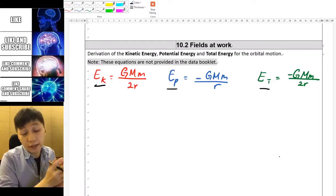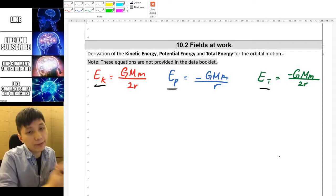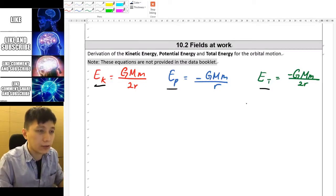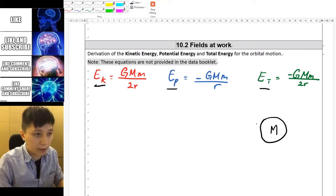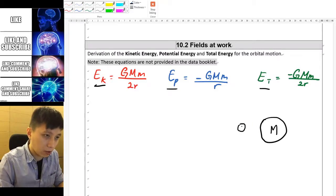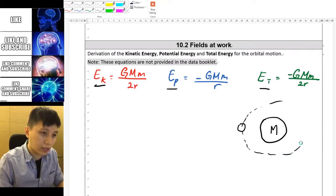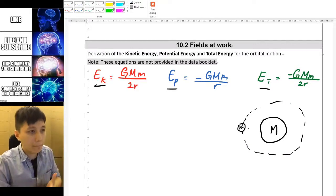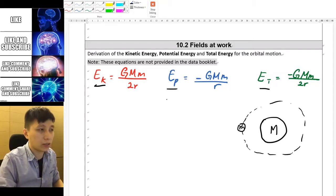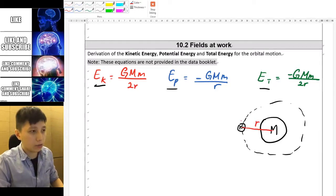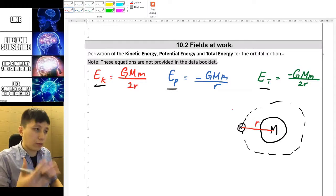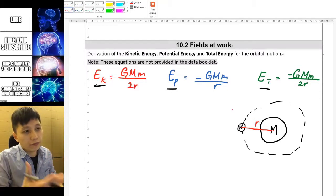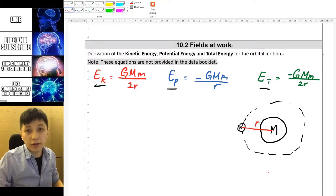Alright so I hope you have done it already and now let's start to derive it. It's actually quite obvious. Talking about orbital motion so you should have a planet with the mass big M and the mass that is orbiting. And of course all these energies are referring to the energy of the small mass small m. And so the distance between the two objects would be r. Now go and try to think about how we can derive these three equations. Pause the video and challenge yourself.